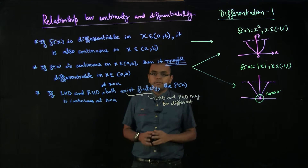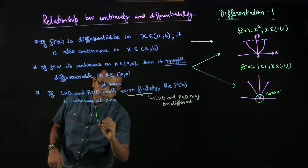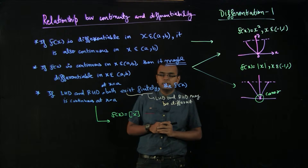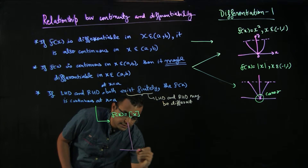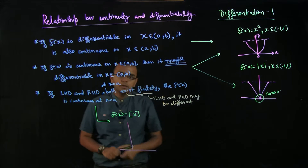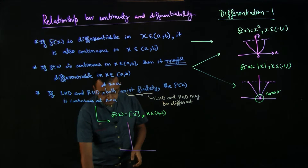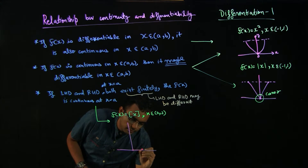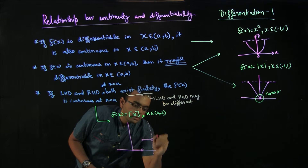This is easy to understand through graphs. For this, I want to give an example of the greatest integer function. Consider f(x) = ⌊x⌋ (greatest integer function) defined on [0, 2].